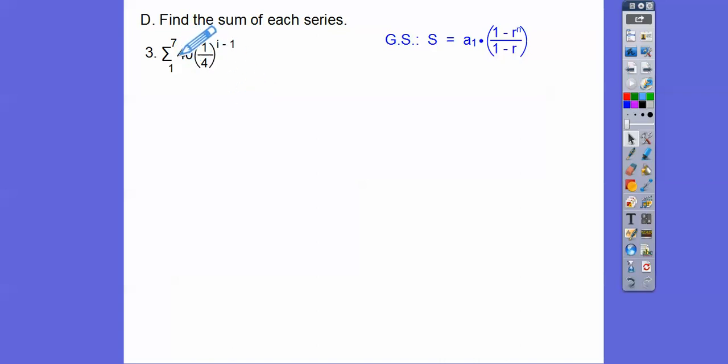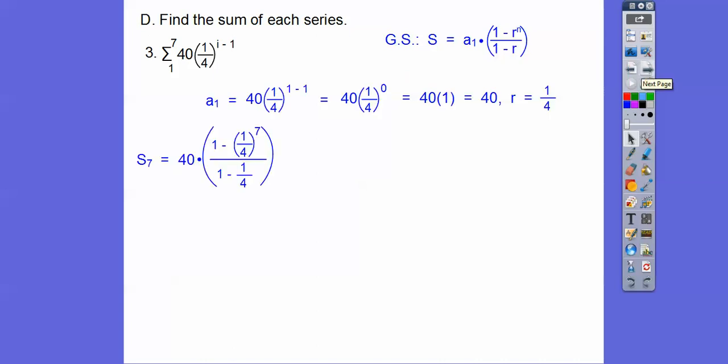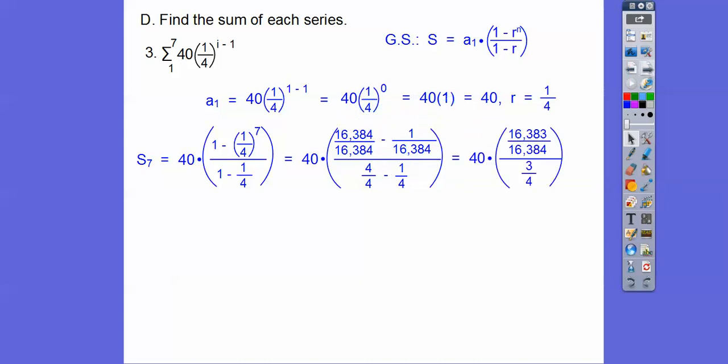Now your first term is always this number. And if you can't see that, plug in 1 right there. 1 minus 1 is 0. 1 fourth to the 0 is 1. 40 times 1 is 40. So that's our first term. And this is r right here, 1 fourth. So we have everything inside of there to plug it in. So if we do that, we plug that in. And then I got to do the exponent now. So 1 to the 7th is 1. 4 to the 7th is a big fat number. Let's get that. So I get that right there. And I changed 1 to the common denominator. Here's 4 to the 7th, 16,384. Here's my 1, 16,384 over 16,384. Here's my 1 minus 1 fourth. So I'm just getting common denominators. So 16,384 minus 1 is 16,383.